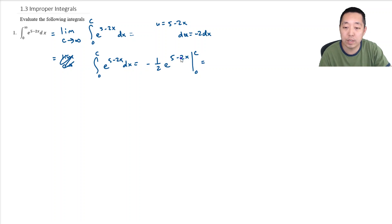The derivative of this, the negative 2 would cancel this negative 1 half when I take the derivative. So I would get negative 1 half e to the 5 minus 2c minus e to the... When I plug in 0, it's just 5. That's equal to negative 1 half.